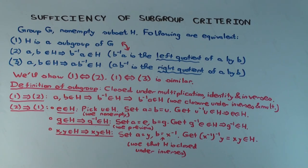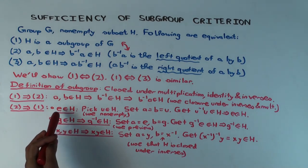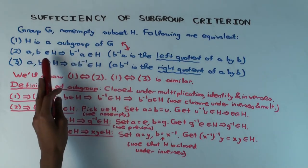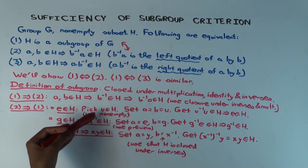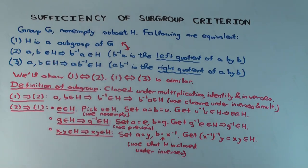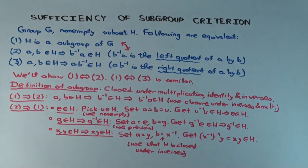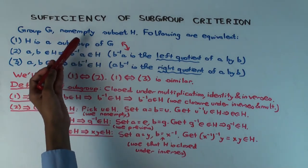So we have shown all three conditions in a particular order: first we used non-empty to get the identity, then used the identity to get closure under inverses, then used closure under inverses to get closure under products. In each step we set a and b appropriately and used the previous result. While this isn't critical per se, it's a nice exercise — instead of checking three conditions to show something is a subgroup, you just show one condition plus non-empty. The same proof technique works for 1 implies 3 and 3 implies 1.